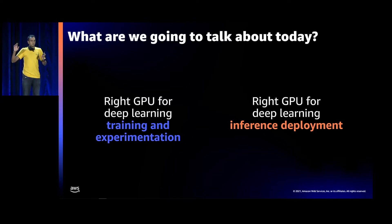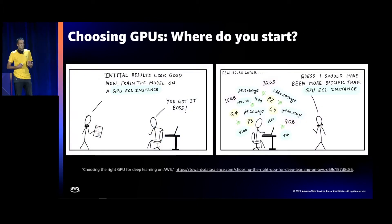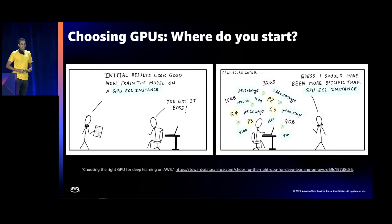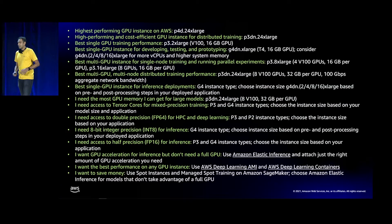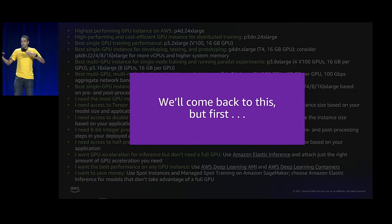Quick show of hands: how many of you spend most of your time training? And deployment? That's almost a 50-50 split, which is good because the presentation has 50-50 of each topic. Chances are you started on your laptop or desktop, then your colleague or boss says go try this on a fast instance on EC2, and you see all these different options and don't know which to choose.